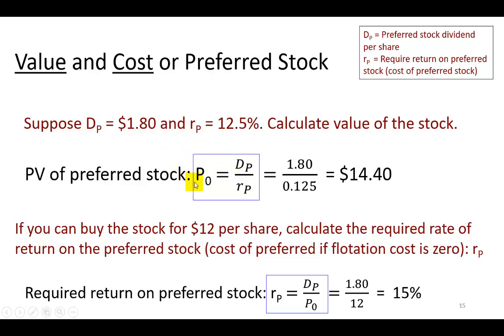To find its value, we're simply going to divide the fixed cash flow by the required rate of return. So in this example, the fixed dividend it pays is $1.80 every year, and the required rate of return is 12.5%, and so by dividing 12.5% into the cash flow of the fixed dividend, we find the value of this preferred stock to be $14.40.